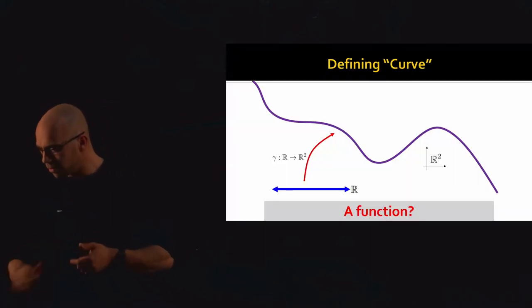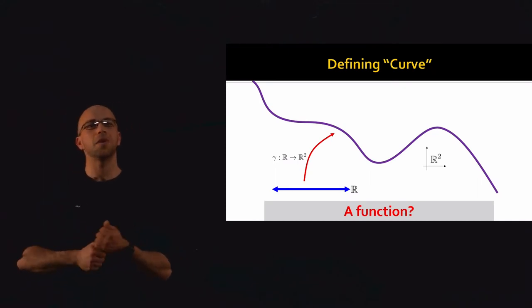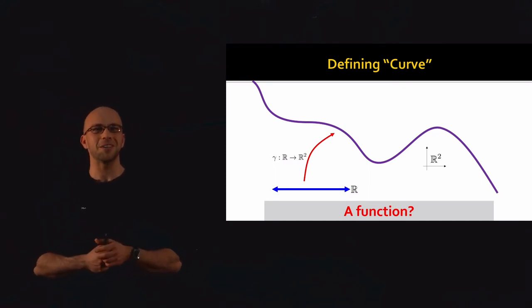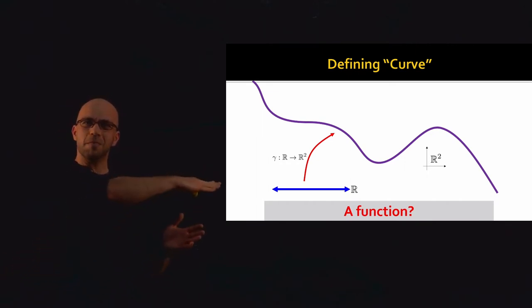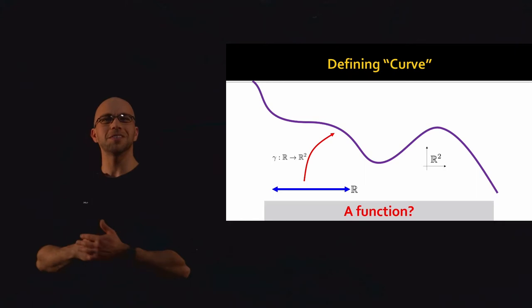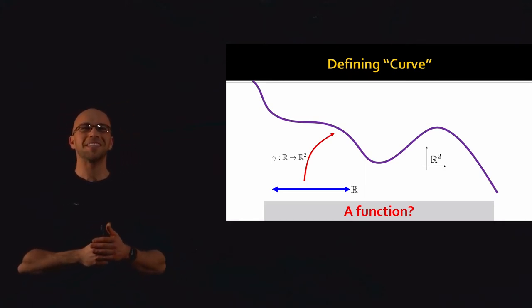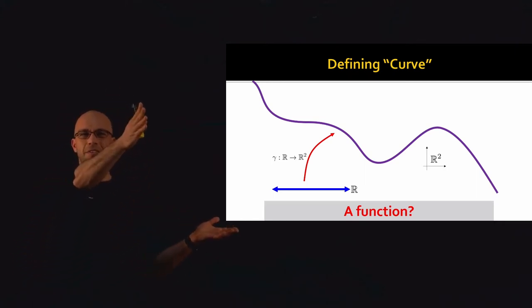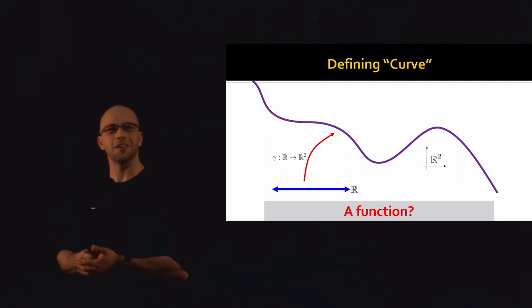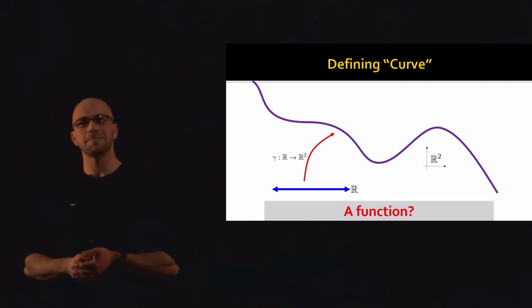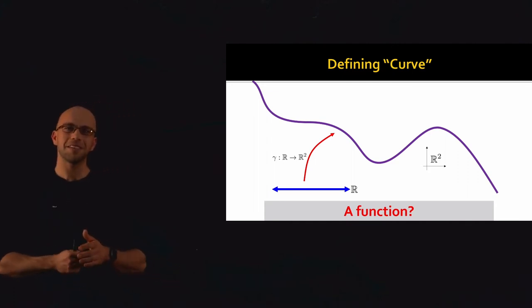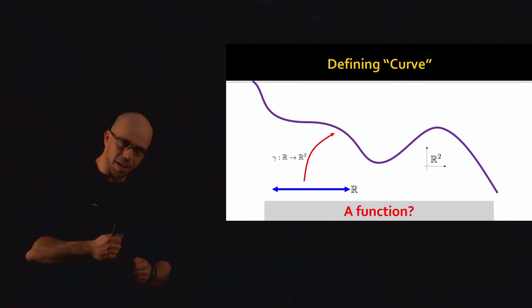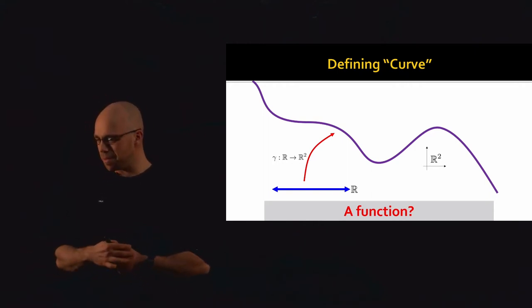If you remember from calculus class, the way you went about defining a curve as a geometric object was quite simple — it was just some function gamma(t), where t is some point on the real line, and gamma(t) is some point in R² (the plane) or R³. The analogy is the car is driving along: t is time, gamma(t) is the position of the car, and as the car drives, it traces out a curve in two or three dimensions.